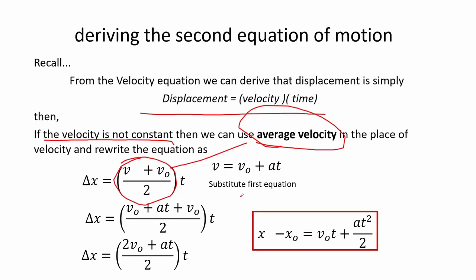Here we can substitute the final velocity or simply v from the first equation of motion and doing simple algebra we arrive to the second equation of motion.